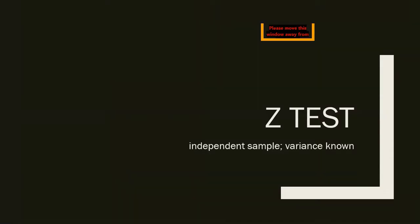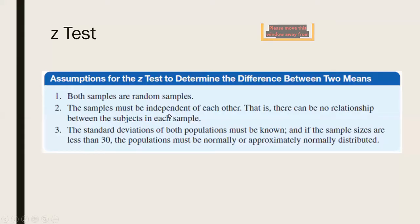Okay, so let's do the Z-test for independent sample. The Z-test for independent sample is very easy. Both samples are random. Samples must be independent. That is, there can be no relationship between subjects in each sample. And the standard deviations of both populations must be known. If the sample sizes are less than 30, then the population must be normally or approximately normally distributed.